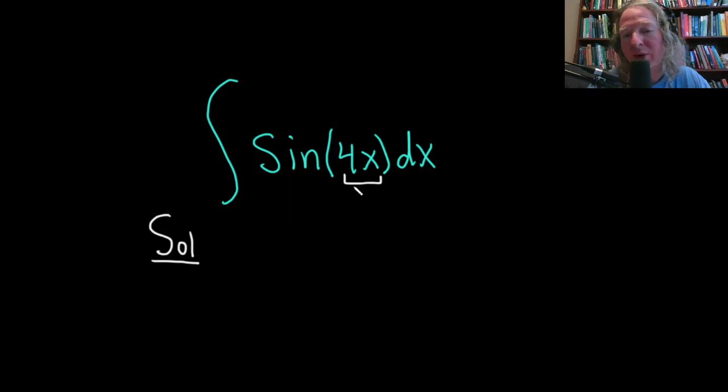To do that, we're going to use u-substitution. The first step is to let u be your inside function, which in this case is 4x. So it's inside the sine function.